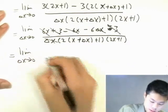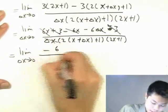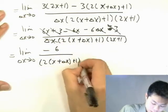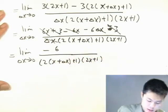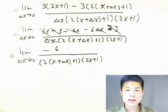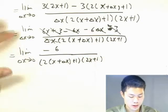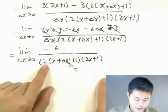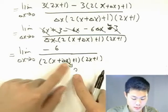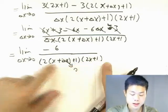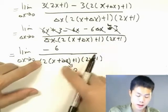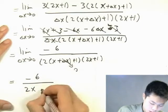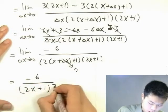So we have delta x and delta x here. The only term left in the numerator is negative 6 delta x. So we can cancel these out. And it becomes negative 6 over this huge bottom part. So now we're going to take the limit. As delta x approaches 0, this term is going to drop out and become 0. What we have left is 2x plus 1 times 2x plus 1, which is 2x plus 1 squared. That's the answer. Negative 6 over 2x plus 1 squared.